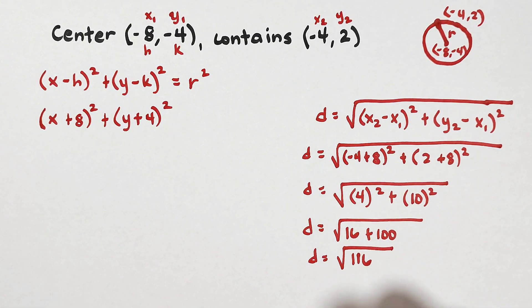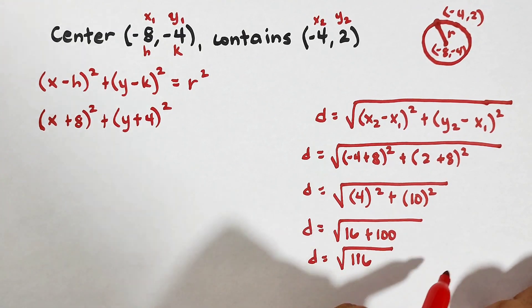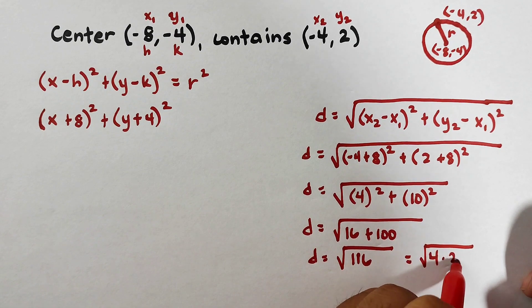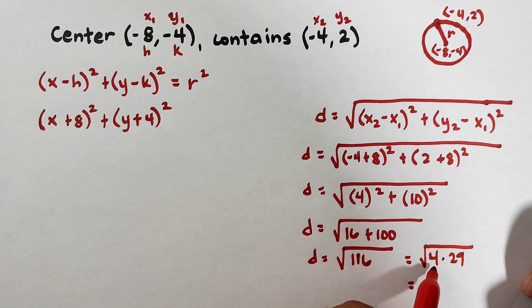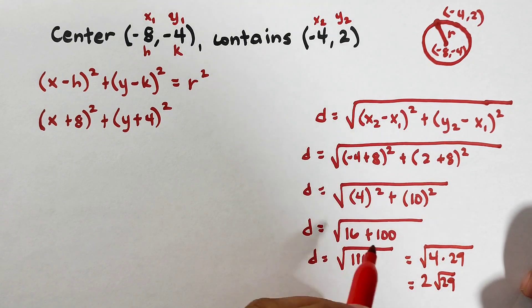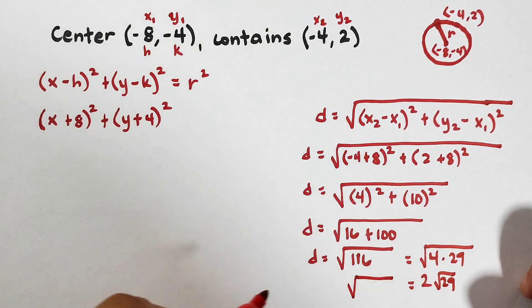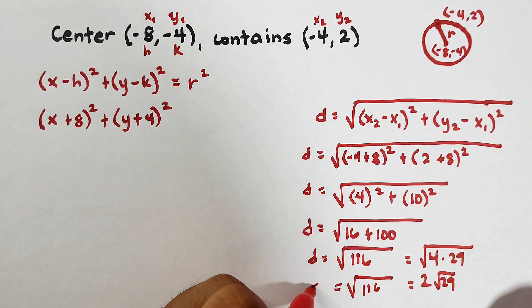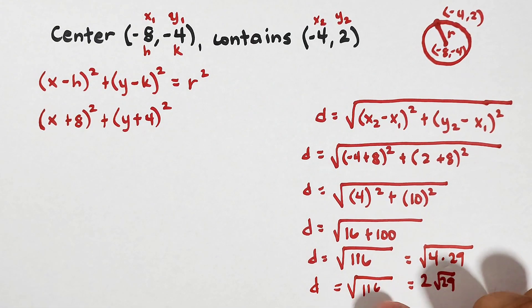Now for the square root of 116, actually, we can extract this. Because the extracted roots are 4 times 29. It will become square root of 4 is 2, and square root of 29. But I will suggest that you just make it square root of 116. Okay?